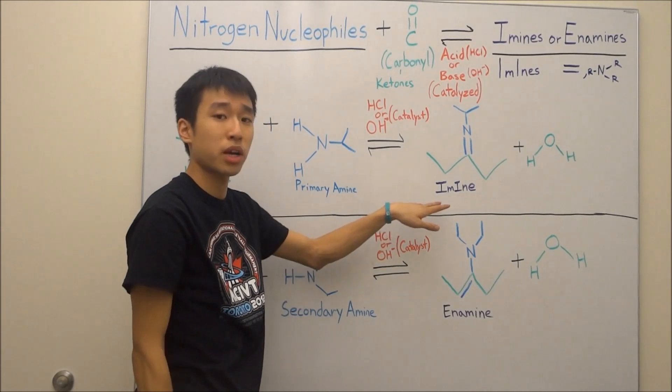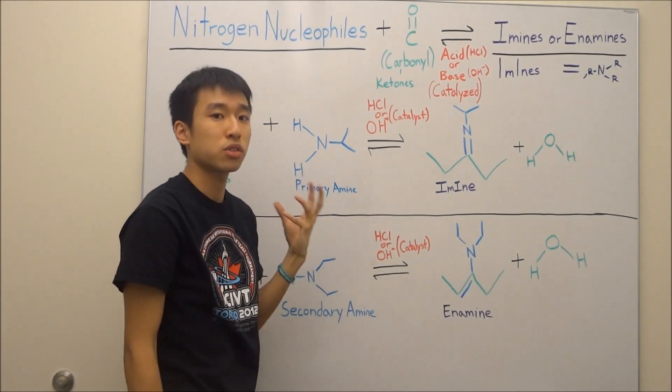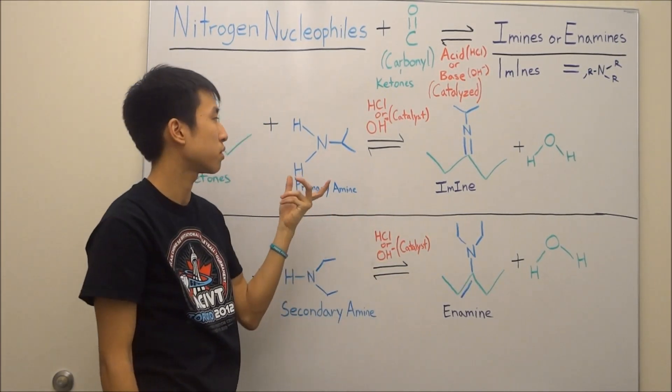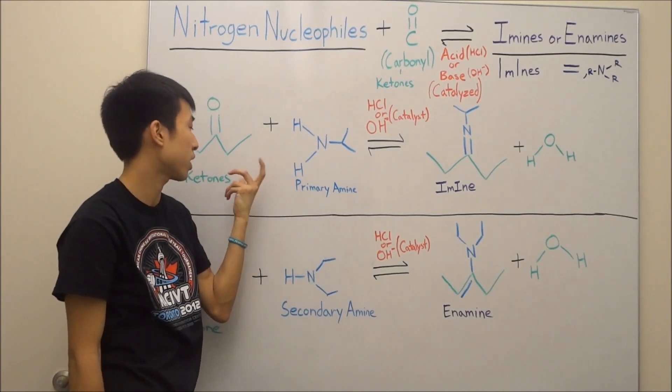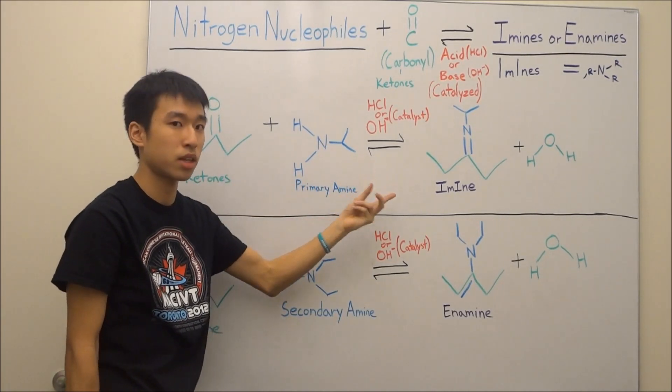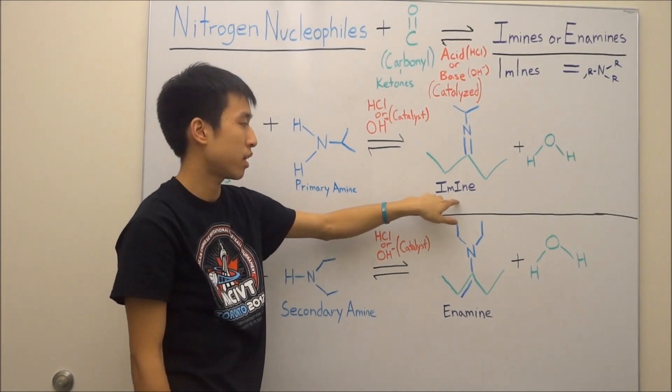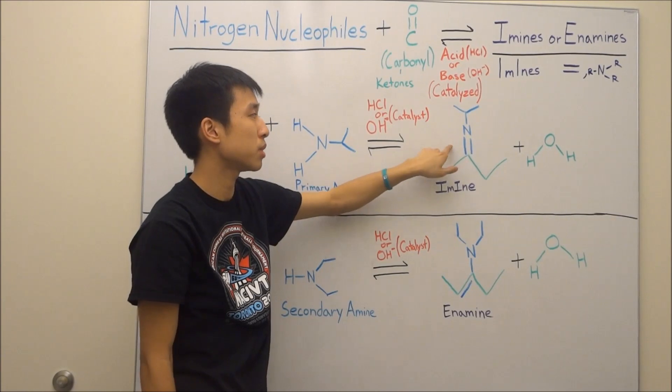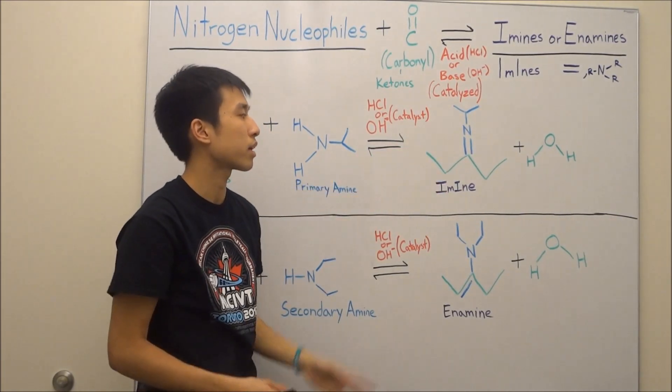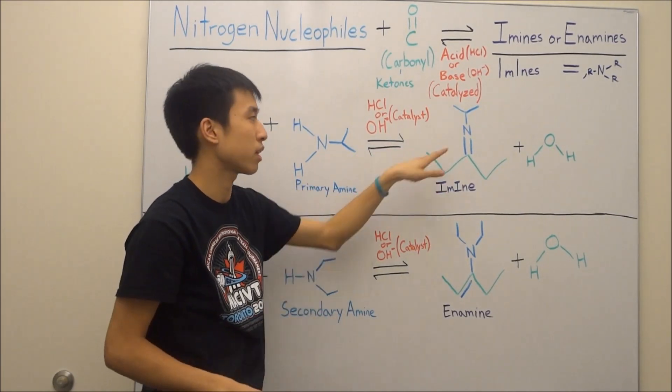Alright. So now I'm going to explain why I had these two up here. And the reason why I wrote imine like this is because the trick that I used to memorize what the product of a primary amine and a ketone is, is an imine. And what it is, is that imine, because there's two I's in it, and then the imine molecule has a double bond between the nitrogen and the carbon.